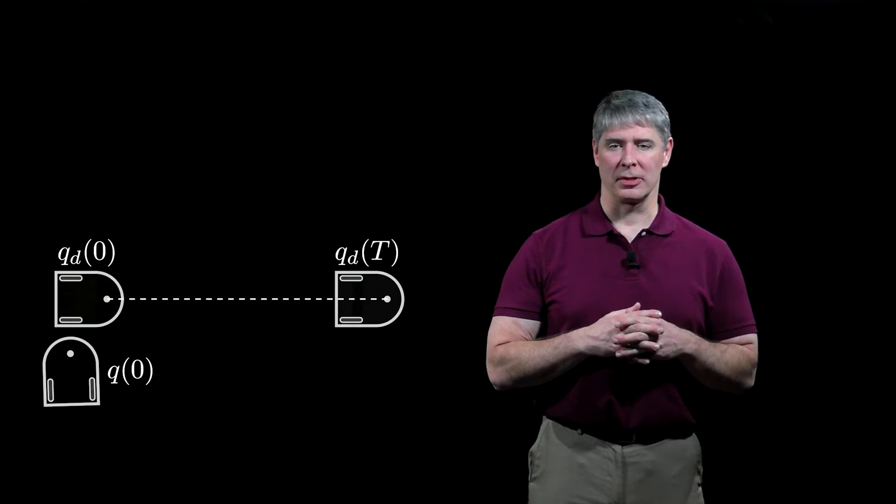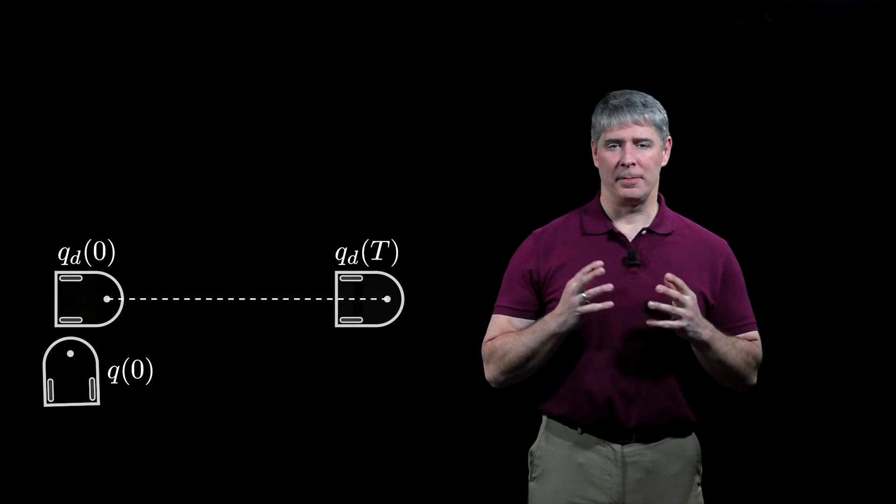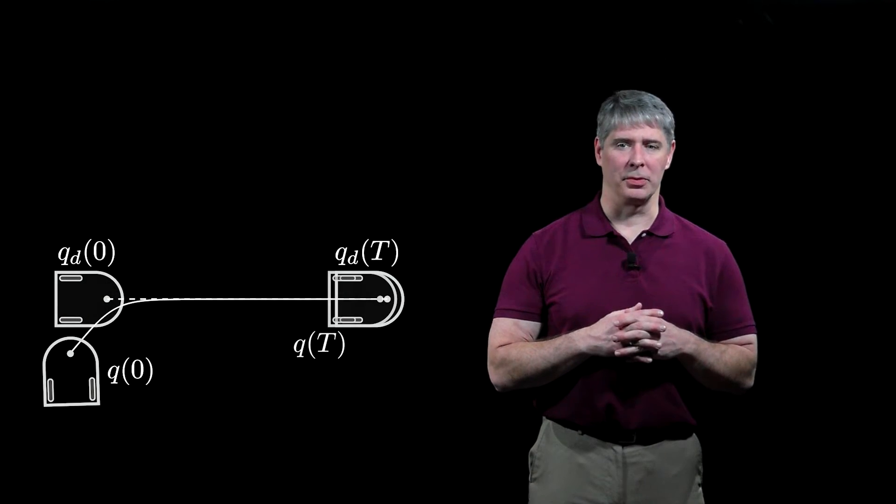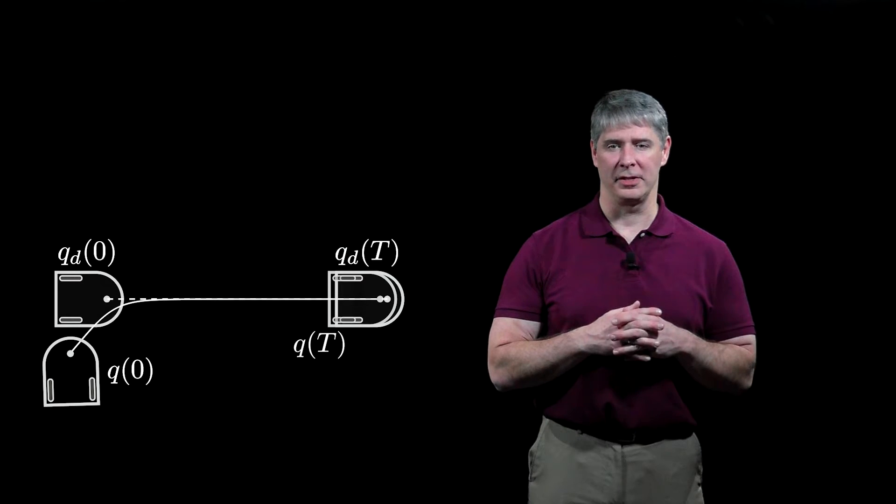For example, if this is the initial configuration of the robot, then proportional control of the point P will drive the full configuration of the robot to the desired trajectory.